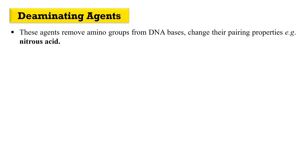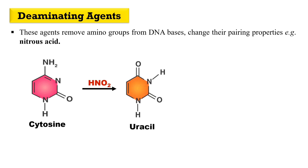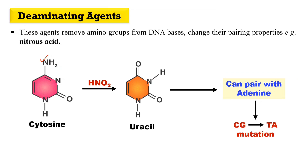The next example of a chemical mutagen is a deaminating agent. Deamination means removal of the amino group. These agents remove the amino group from the DNA base and change its properties. The example is nitrous acid (HNO₂). For instance, cytosine has an amino group — nitrous acid removes this amino group, and as a result oxygen appears in its place, converting cytosine into uracil. Uracil pairs with adenine, which causes a CG-to-TA mutation.